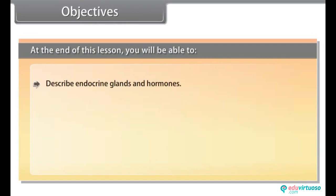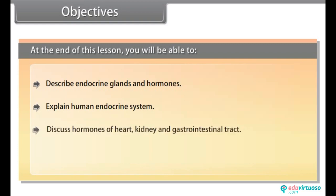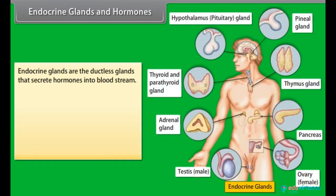Objectives: At the end of this lesson, you will be able to describe endocrine glands and hormones, explain the human endocrine system, discuss hormones of heart, kidney and gastrointestinal tract, describe the mechanism of hormone action. Endocrine glands are the ductless glands that secrete hormones into the bloodstream.